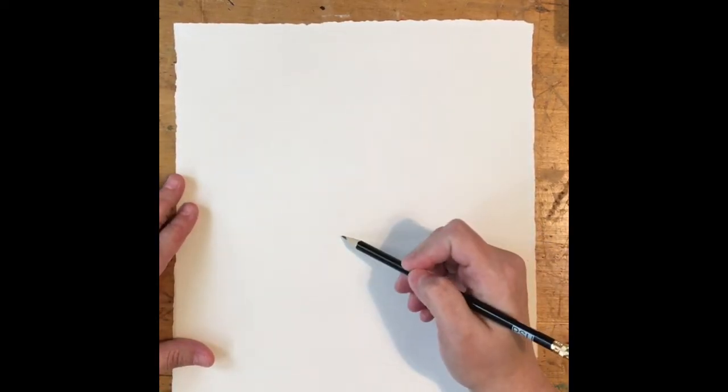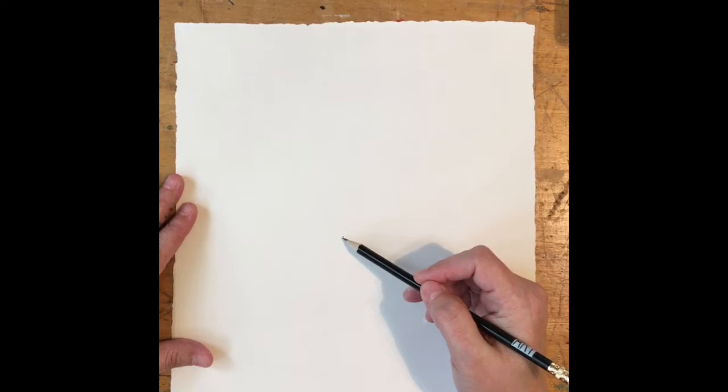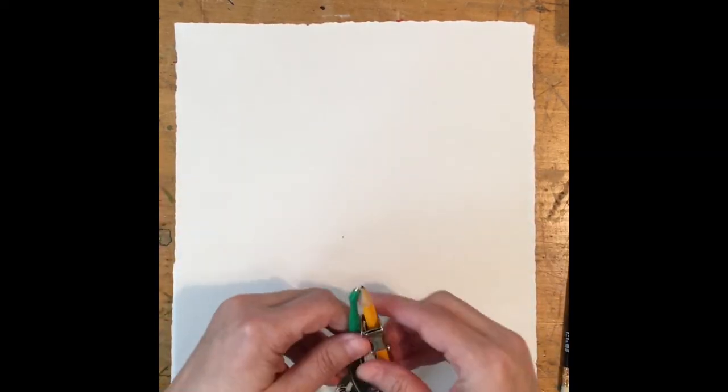The first thing I do before I get started on my white piece of paper is I mark the center. So here is going to be my center. It doesn't have to be the exact center of your paper but I always like to mark the center so I know where to put my compass.